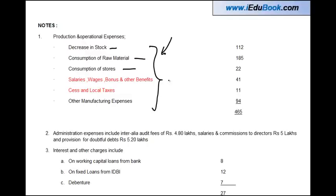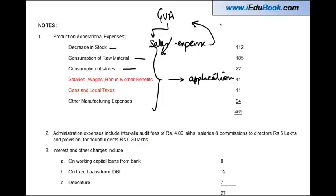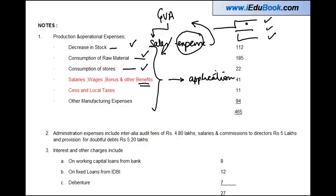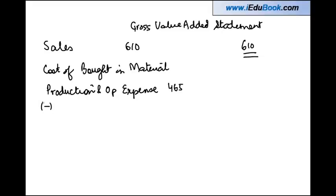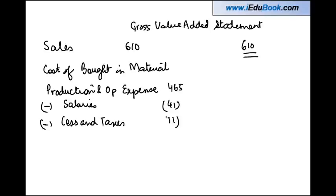Decrease in stock is an expense, consumption of raw material is an expense, stores expense, and salaries and wages — these are applications. When calculating GVA, you reduce expenses from sales to get GVA, and once you have GVA, you find out how much is attributable to various parties — this is the application. So salaries (41) are an application, and local taxes (11) are a payment to the government, also an application. Therefore: 465 minus 52 (which is 41 plus 11) gives you 413.